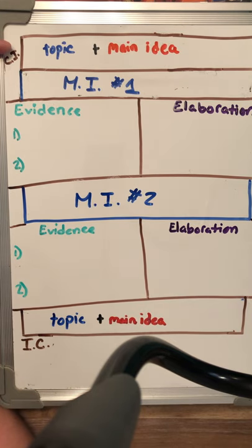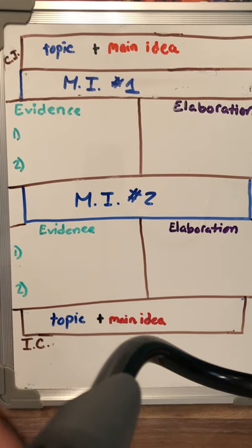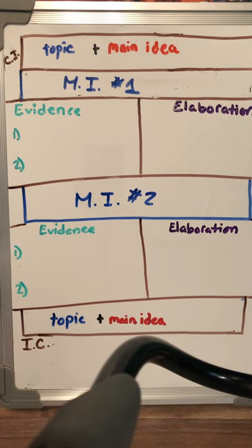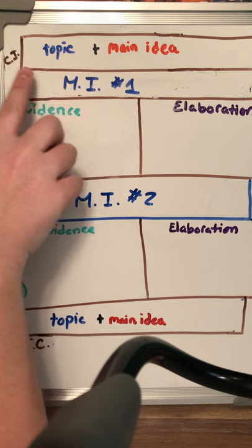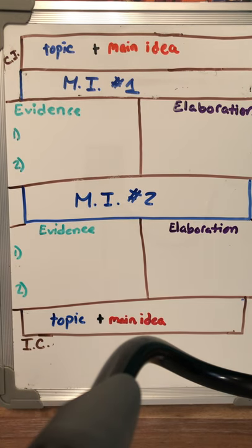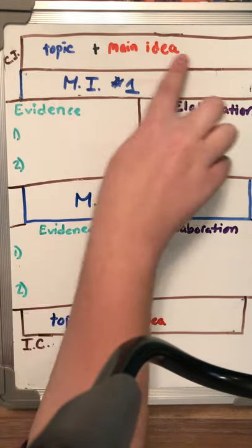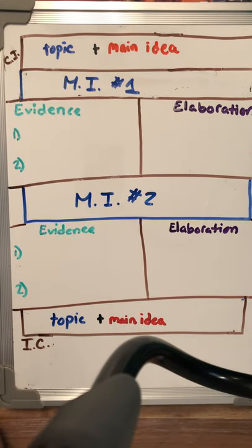If you are for it, you're going to say something like, I believe, I think, I feel that cell phones should be allowed in the schools or the classrooms. If you don't agree with it, you should say something about how I do not believe, I do not feel, I do not like the idea of having cell phones in the classroom. I should know within this controlling idea what your opinion, what your stance is on this argument.